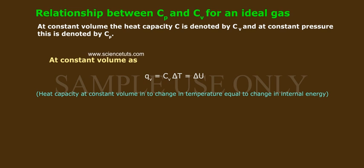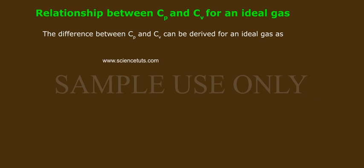Heat capacity at constant volume into change in temperature equals change in internal energy. At constant pressure, QP equals CP into delta T equals delta H. The difference between CP and CV can be derived for an ideal gas.